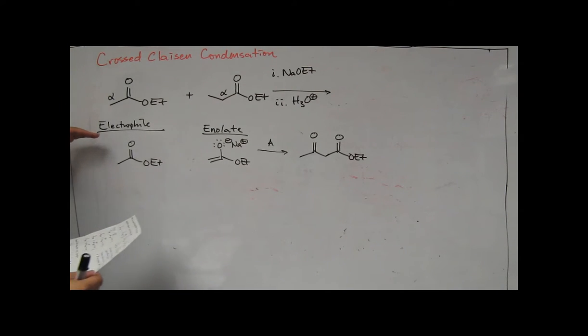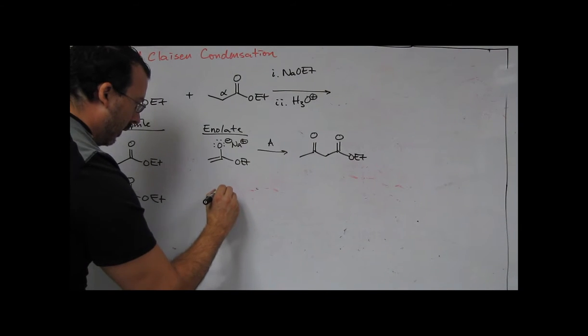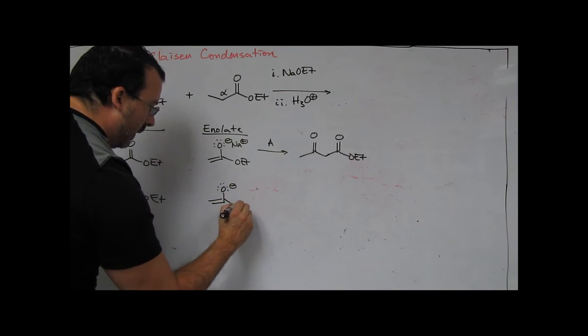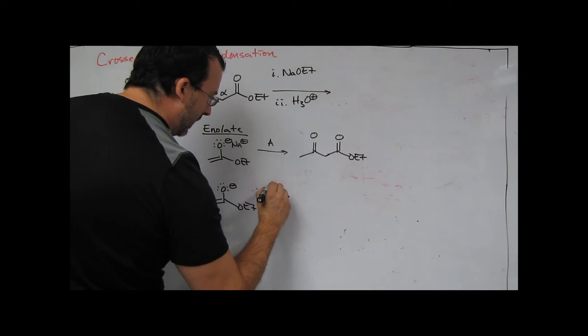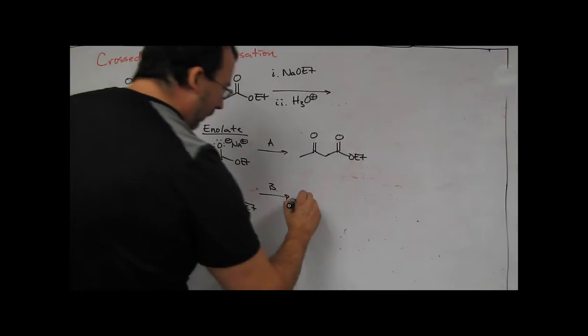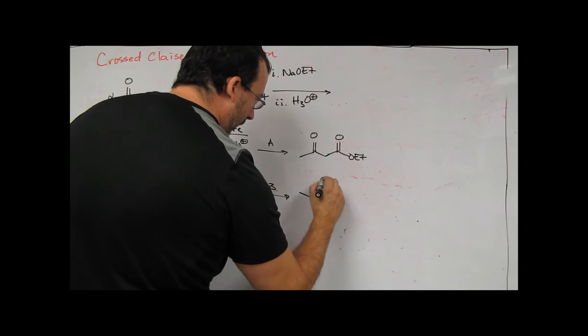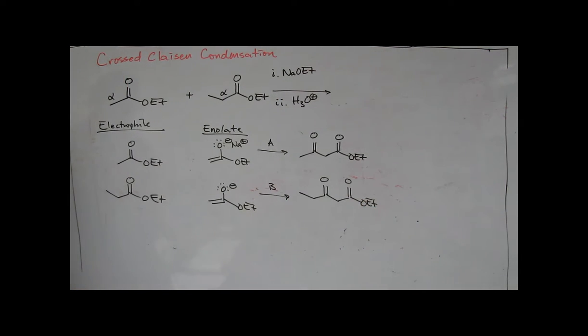So let's go ahead and switch the electrophile now. And we're going to use our coupling partner here. Let's keep the enolate the same. So this is our first example of the crossed Claisen. This will give us B. So notice now we've formed two different products based on these scenarios.